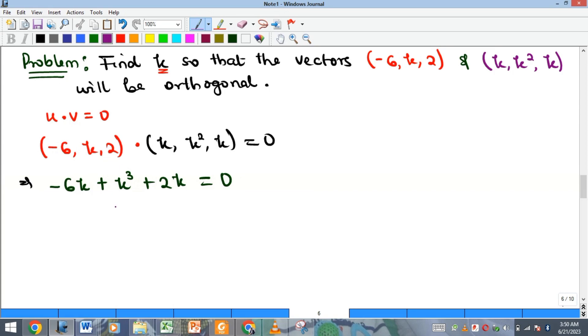So let's make some factorization here. We have -6 plus k squared plus 2, all equal to zero. And then we can factor out k into k squared minus 6 plus 2.